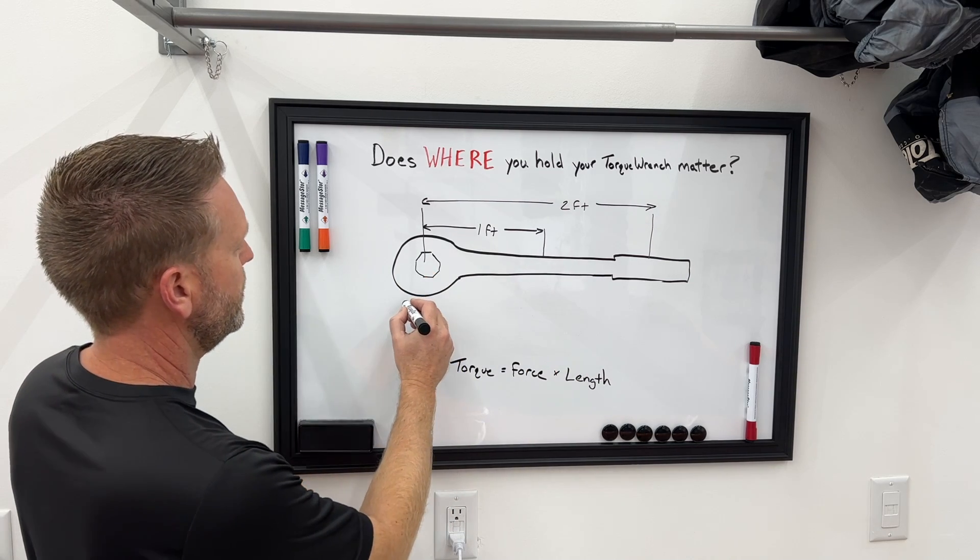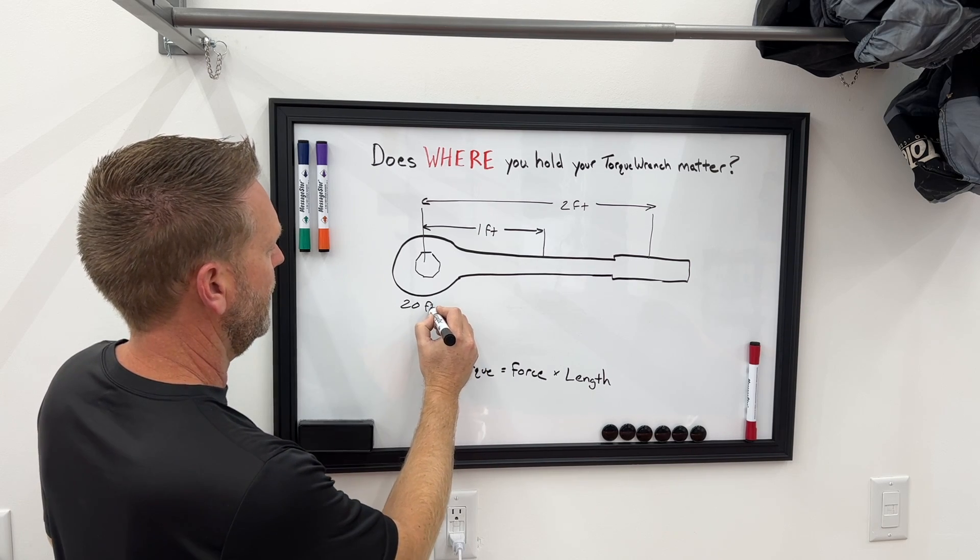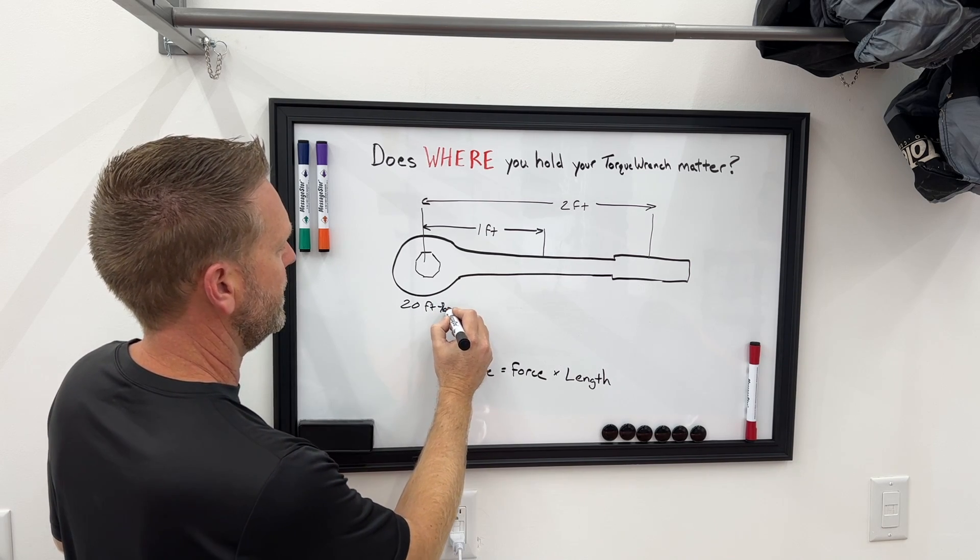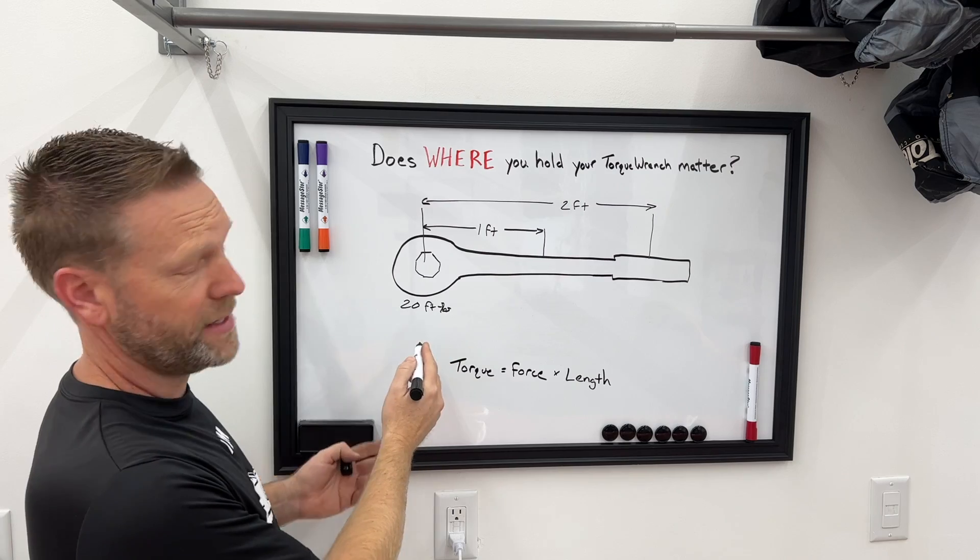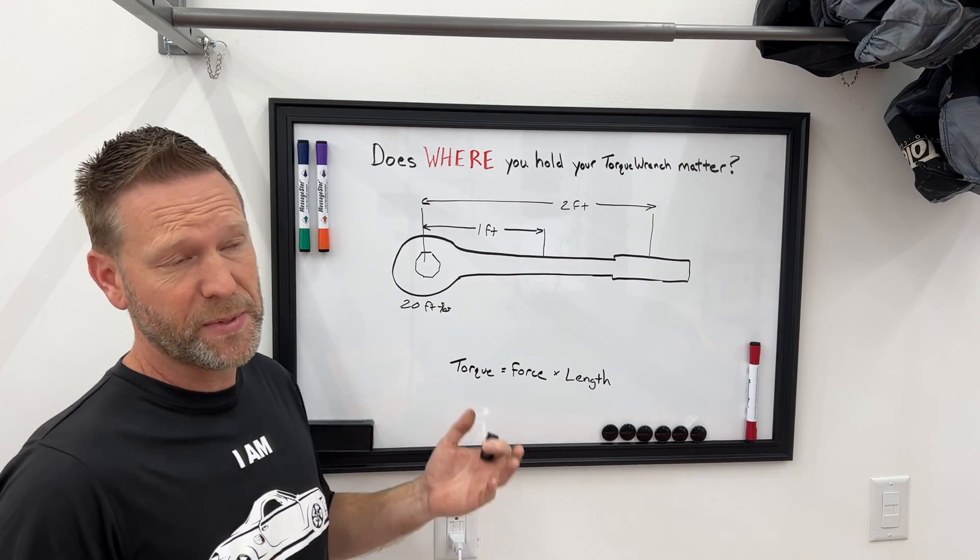So if we wanted to torque this to 20 foot pounds—I heard somebody else say you're supposed to say pound feet, but if you look at the actual torque wrench, it says foot pounds. Everybody says foot pounds.